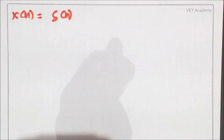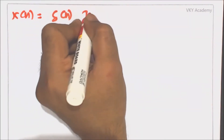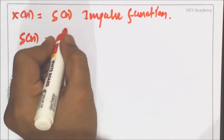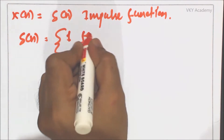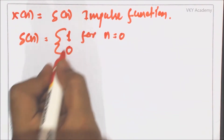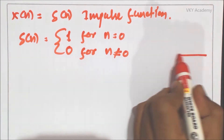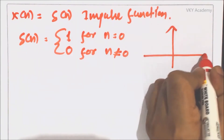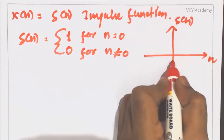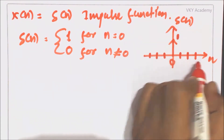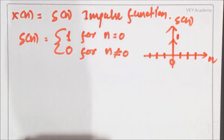Let us first understand what exactly δ(n) is. δ(n) is actually the unit impulse function. Its functional representation is: δ(n) = 1 for n = 0, and δ(n) = 0 for n ≠ 0. Graphically, on the n-axis versus δ(n) axis, at n = 0 we have an amplitude of 1, and at all other time instants δ(n) = 0. This is the unit impulse signal.